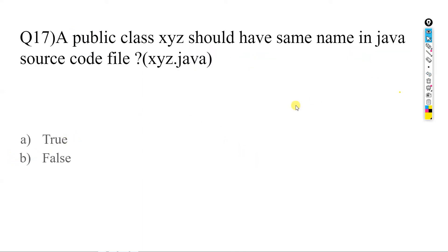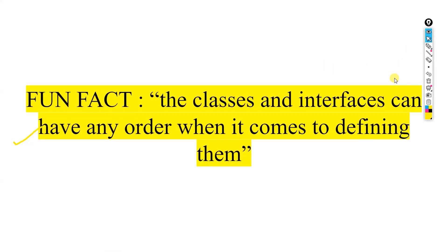If a public class is named XYZ, should the Java source code file also be named XYZ.java? The answer is true — the name of the source code file and the name of the public class must be the same. Fun fact: classes and interfaces can be defined in any order in a Java file. Java will start running wherever it finds the main method.